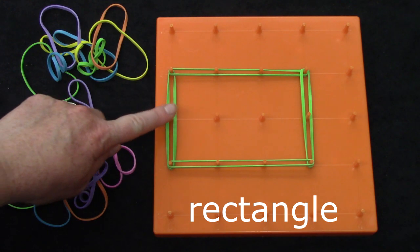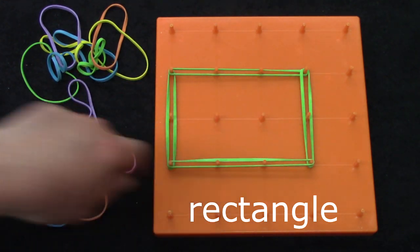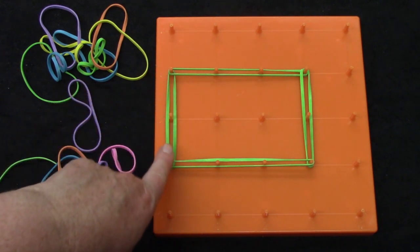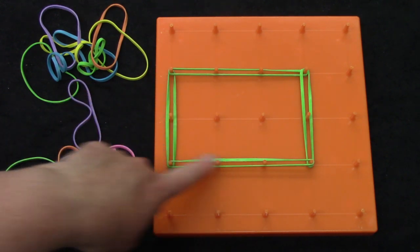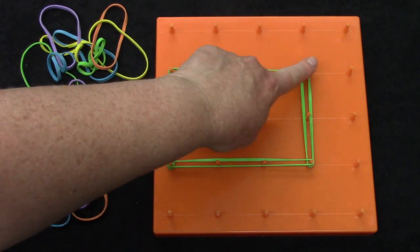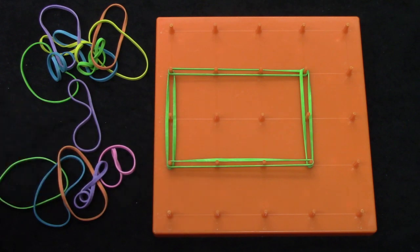A rectangle has one, two, three, four sides. How many angles does it have? Remember an angle is the point where the two sides meet. This has one, two, three, four angles. Some people call them corners.